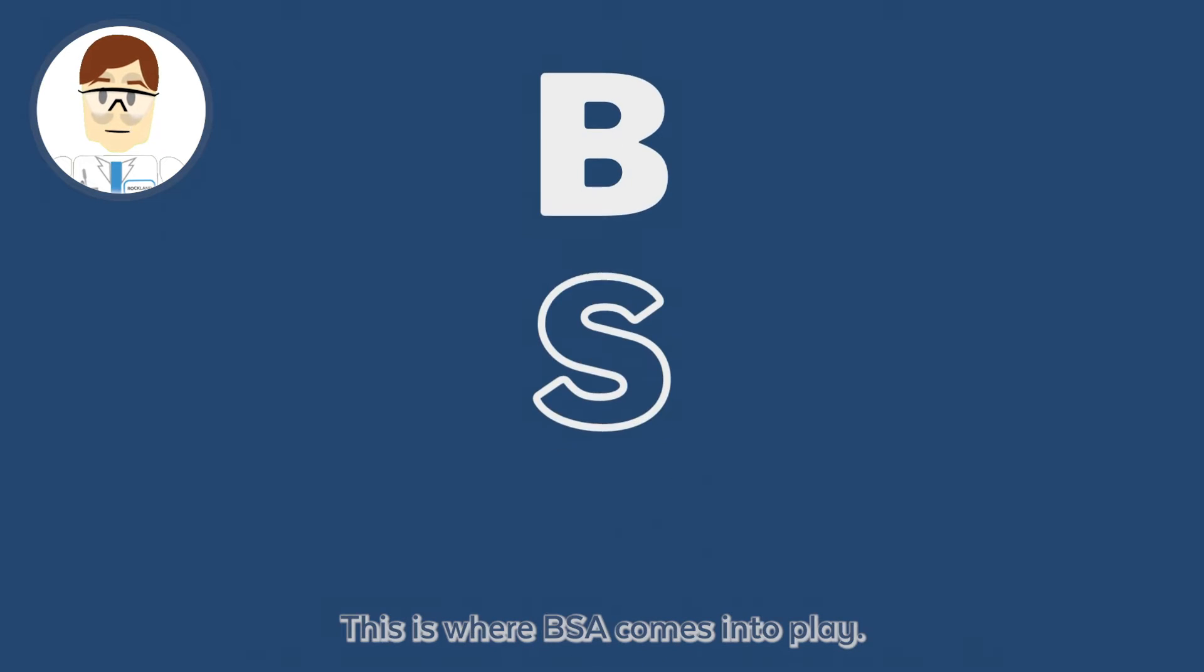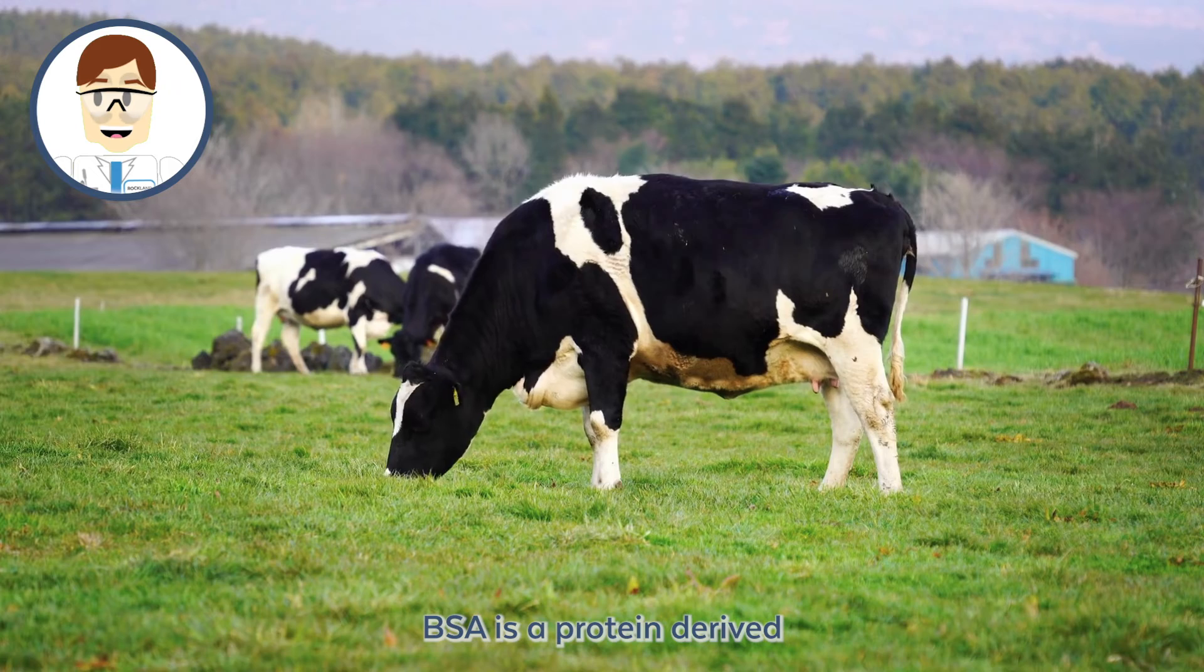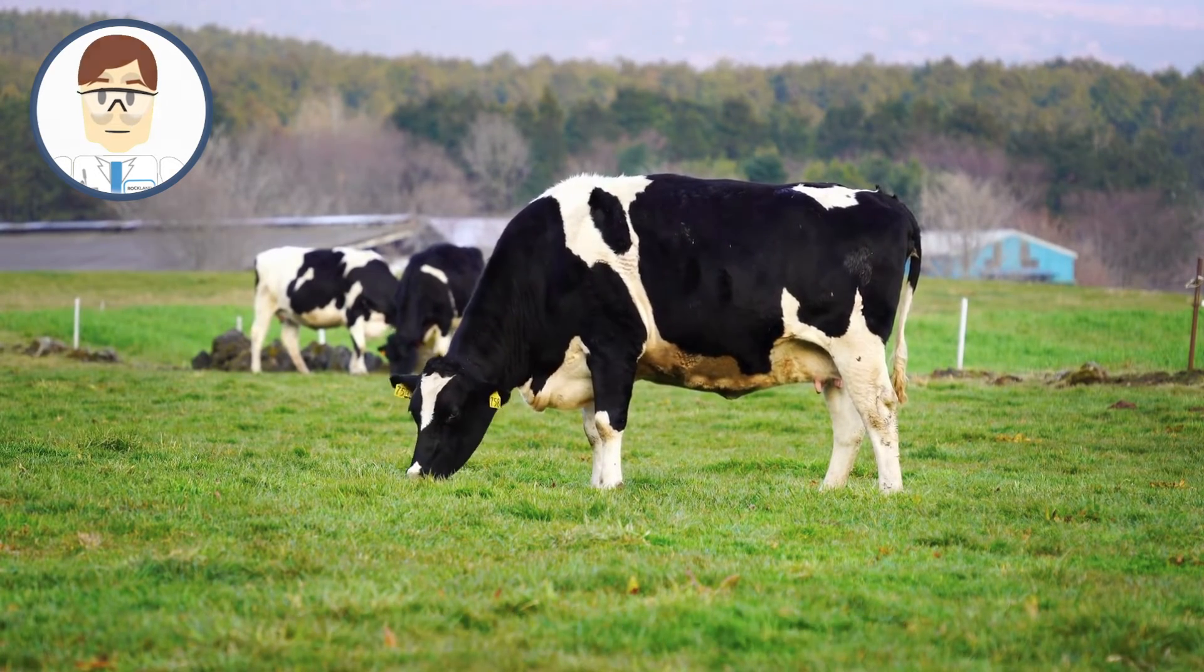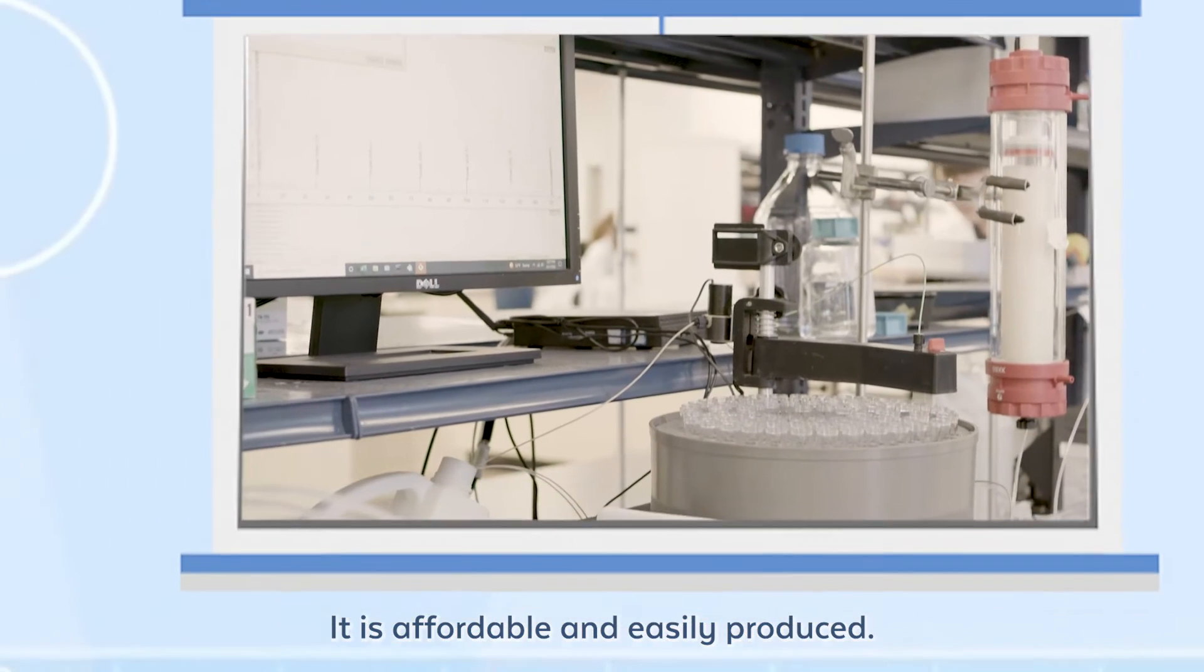This is where BSA comes into play. BSA is a protein derived from the blood serum of domestic cattle. It is affordable and easily produced.